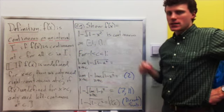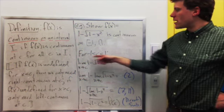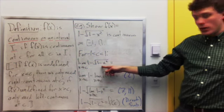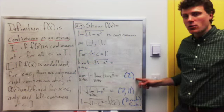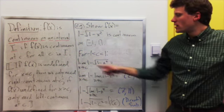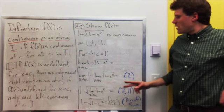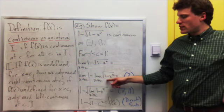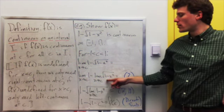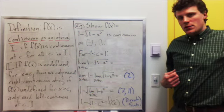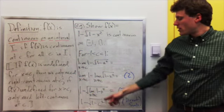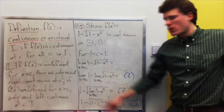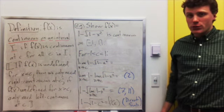For c between negative 1 and 1, the limit as x approaches c of 1 minus the square root of 1 minus x squared: by the second limit law, I can break up a difference into the difference of limits. The limit of a constant, by rule number 7, is itself, and rule number 11 says the limit of a square root is the square root of the limit. Finally, the direct substitution property says that for a polynomial like 1 minus x squared, I can just plug in c, giving 1 minus the square root of 1 minus c squared, which equals f of c.